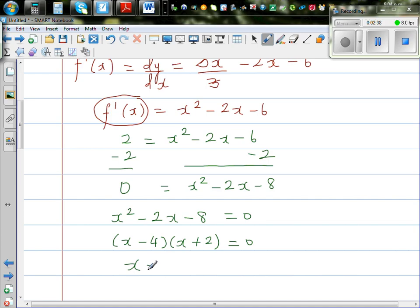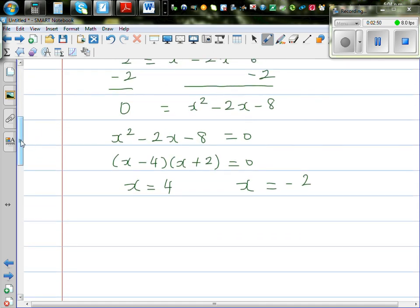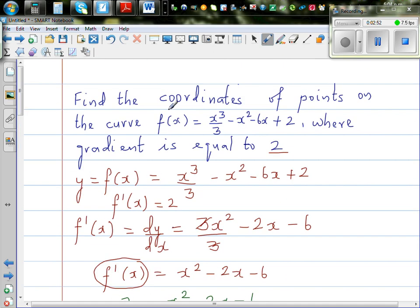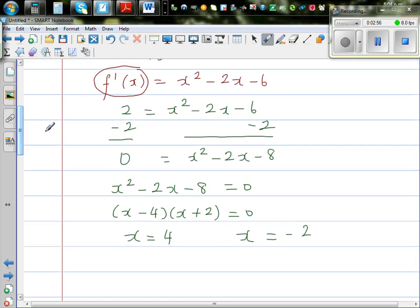So I can say x is equal to 4 or x is equal to negative 2. So when x is 4 or x is negative 2, your gradient is 2. But the question is, we want to find the coordinates of the points. We only found x, we need to find y.